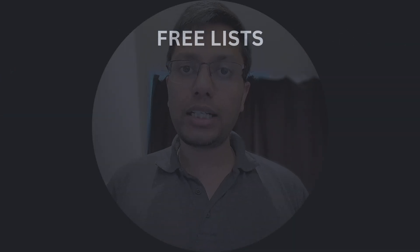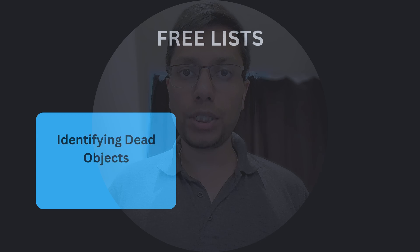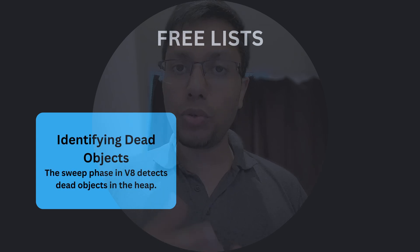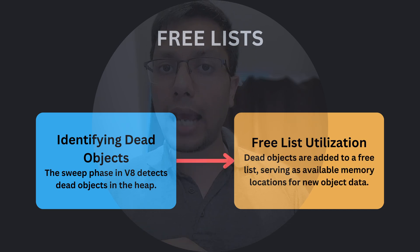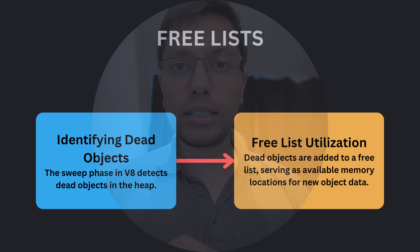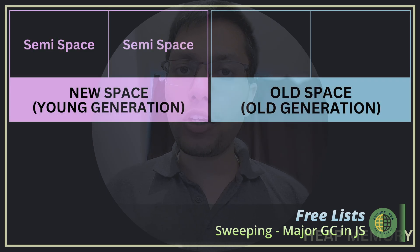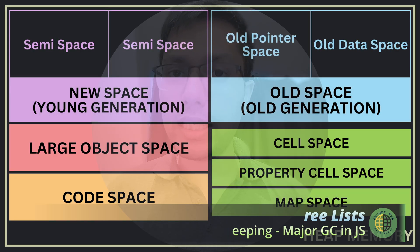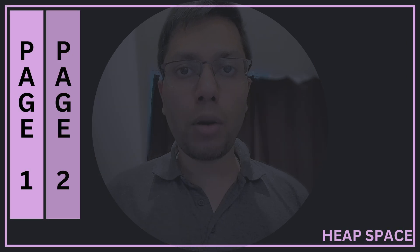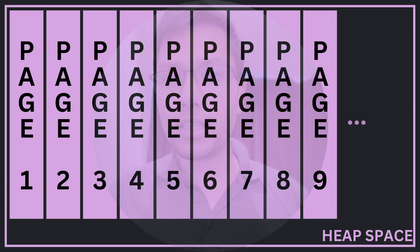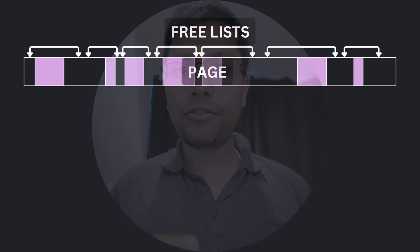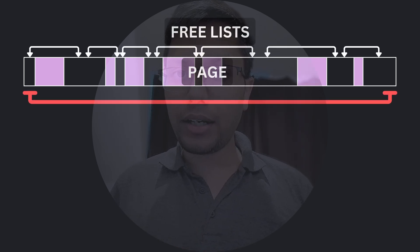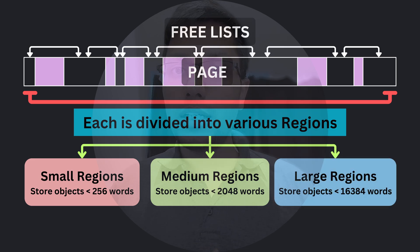Throughout the video I have mentioned allocation and deallocation of objects — but how does V8 accomplish this? The sweep phase of V8's garbage collection process involves scanning the heap for dead objects and adding them to a data structure known as a free list. The free list is essentially a record of memory locations in the heap that are available for writing new object data. This free list is then used to allocate new objects in the future. Each page has its own separate free list, which is further categorized into small, medium, and large regions depending on the size of the objects they can accommodate.